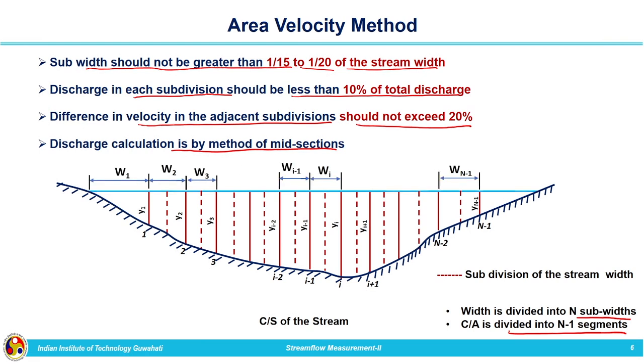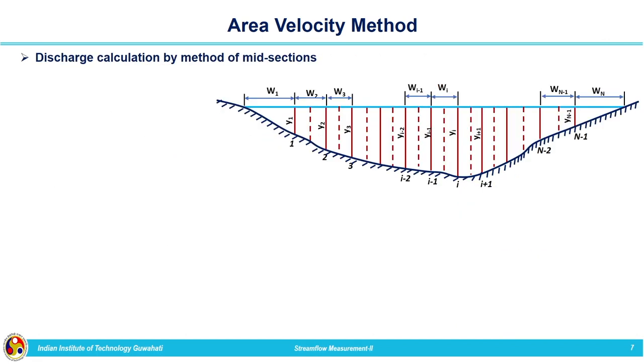For the discharge calculation by method of midsection: each subsection except the first and last can be approximated as a rectangle, so area is calculated by multiplying depth and width. The velocity corresponding to each segment is measured and discharge in each segment is obtained by multiplying velocity and area. For the first and last segments, the shape is not rectangular — the area should be calculated by considering them as triangles.